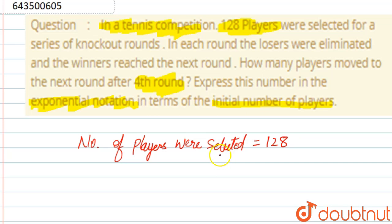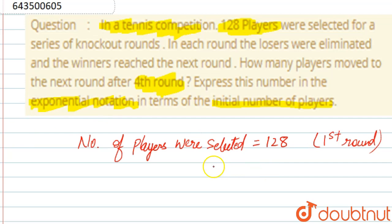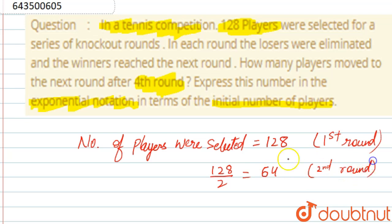After the fourth round we should tell the answer. So this is the first round they are talking about. After the first round, half of them were eliminated, which means in the second round 128 divided by 2 players will be there — that is 64. So in the second round, only 64 are left.